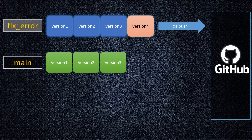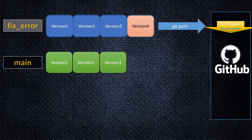On GitHub, I go and make a pull request. Basically, I'm asking to merge my FixError branch into the main branch. Somebody needs to go and review it — check what I did, if it looks okay, whether I made any mistakes or typos.